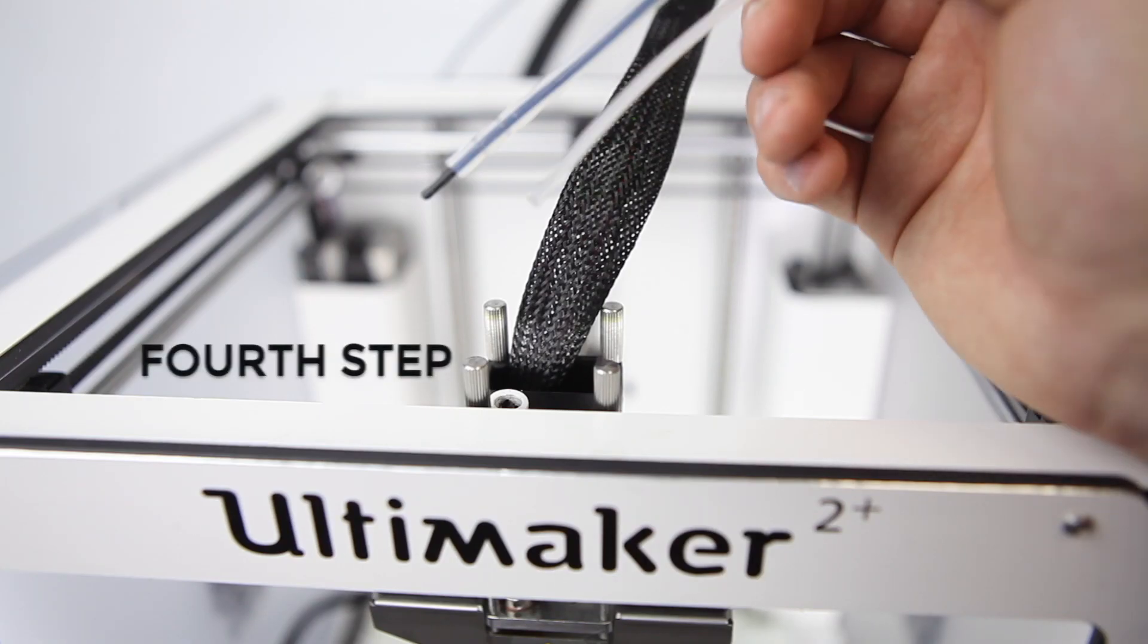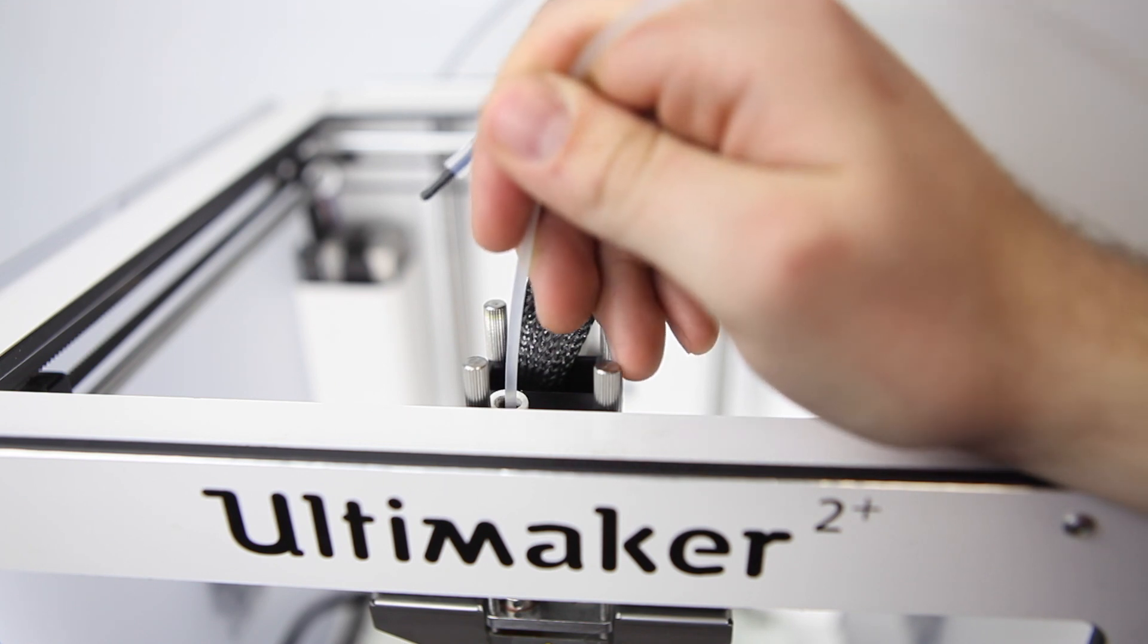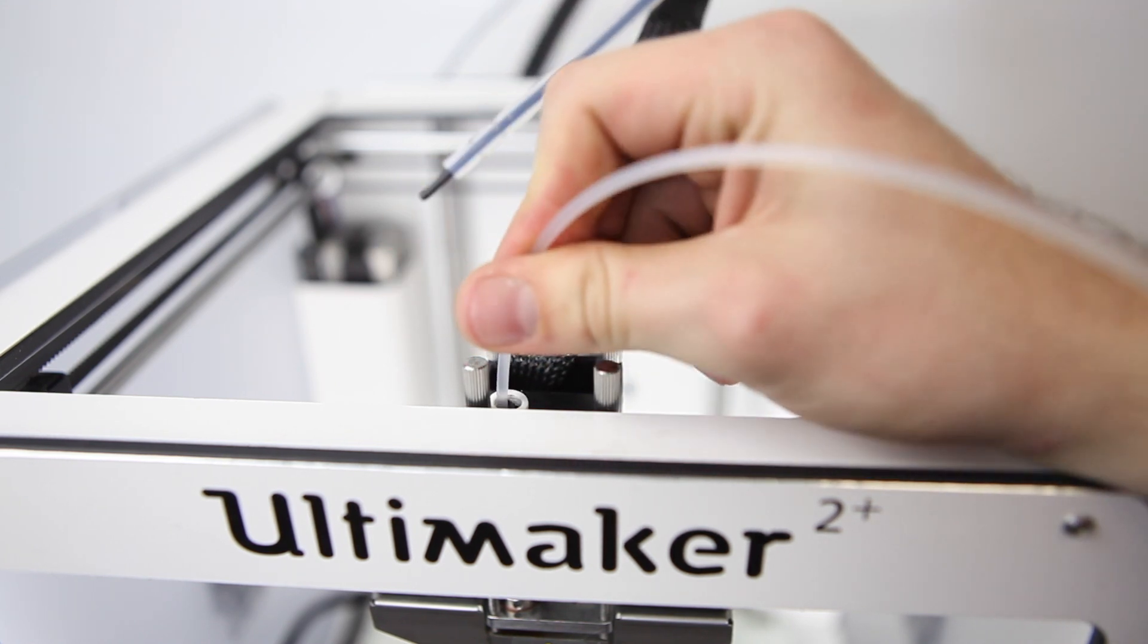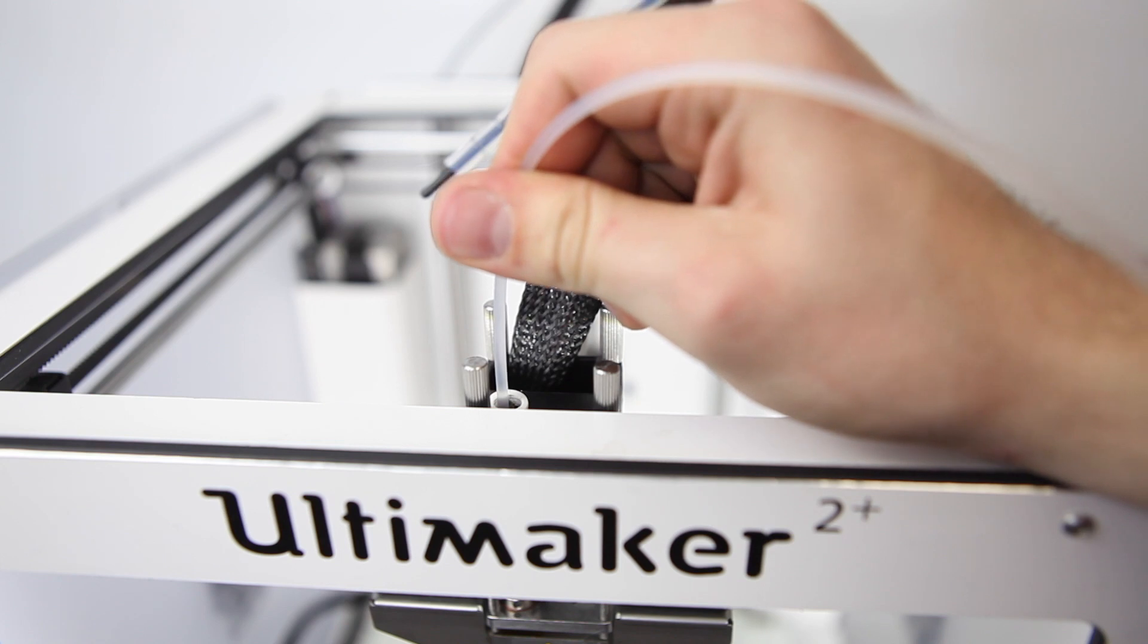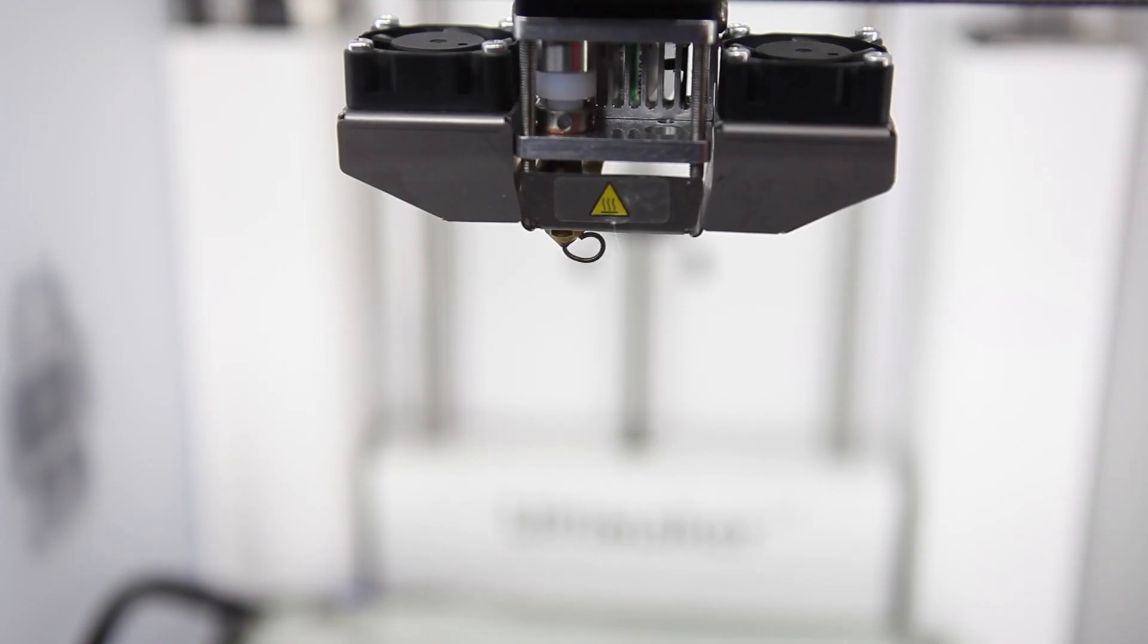Third step, to do a cold pull, use cleaning filament or nylon filament. Heat up the nozzle to 250 degrees Celsius and push it through the nozzle until you don't see any of the previous filament coming out the hotend.